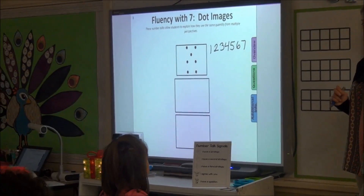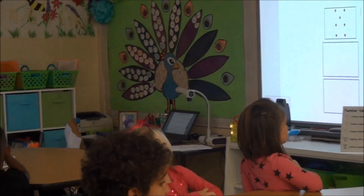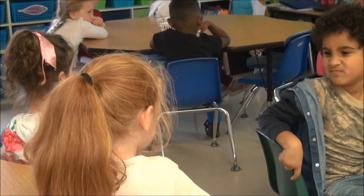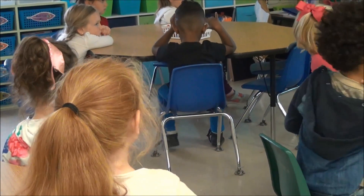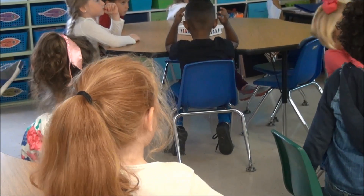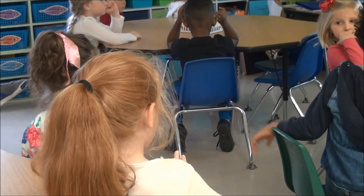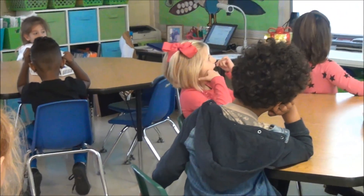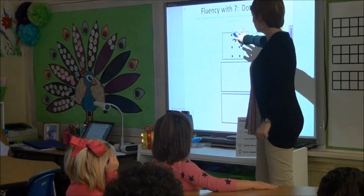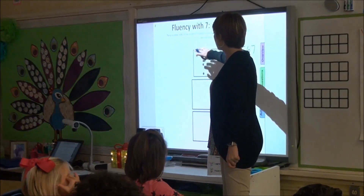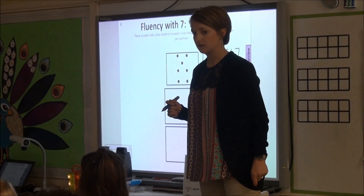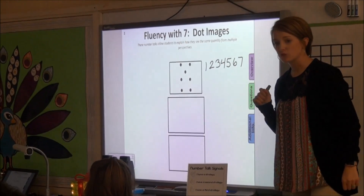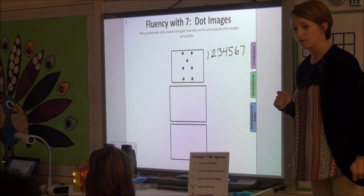Let me see who has another strategy. Kate, I like that. What strategy did you use, Kate? Subitizing. You subitize? What does subitizing mean? Okay, subitizing means that you know the number without counting them. If you recognized one number and counted the rest, what is that? Counting on. So what number did you start with, Kate? Five.